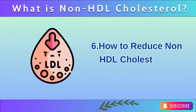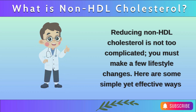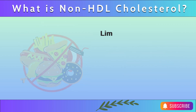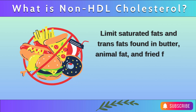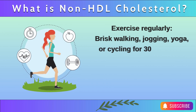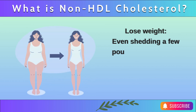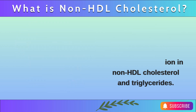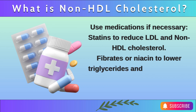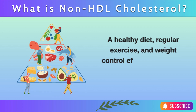How to reduce non-HDL cholesterol: reducing non-HDL cholesterol is not too complicated — you just need to make a few lifestyle changes. Adjust your diet by eating plenty of vegetables, fruits, whole grains, and fatty fish like salmon and mackerel. Limit saturated fats and trans fats found in butter, animal fat, and fried foods, and reduce sugary foods and drinks like candy and soda. Exercise regularly: brisk walking, jogging, yoga, or cycling for 30 minutes a day, at least 5 days a week, can significantly improve non-HDL cholesterol. Lose weight: even shedding a few pounds can lead to a significant reduction in non-HDL cholesterol and triglycerides. Use medications if necessary, such as statins to reduce LDL and non-HDL cholesterol, fibrates or niacin to lower triglycerides and increase HDL, and ezetimibe to prevent cholesterol absorption from food. A healthy diet, regular exercise, and weight control effectively control non-HDL cholesterol.